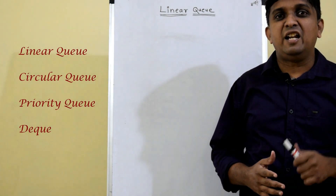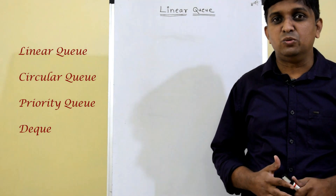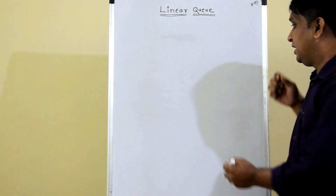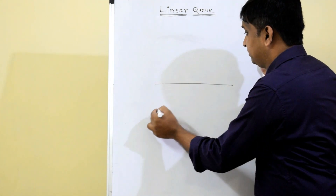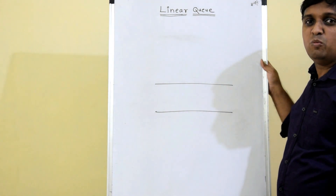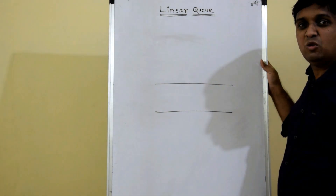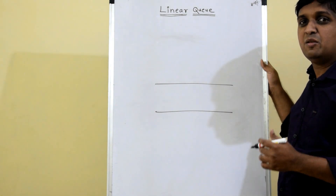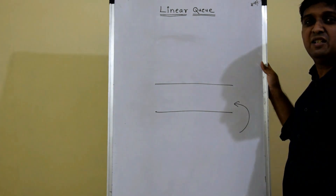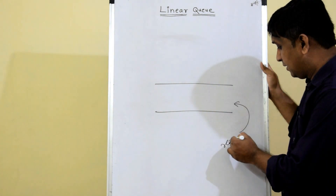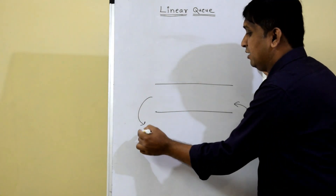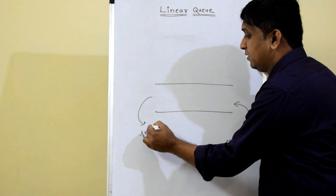Deque is doubly ended queue. In this video we are going to see the linear queue. Suppose this is the container used to hold elements. Queue is both-end-open data structure, unlike stack which is one end open, one end closed. The end from which we insert the element is called the rear end, and the end from which we remove elements is called the front end.